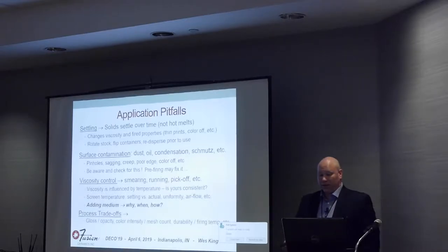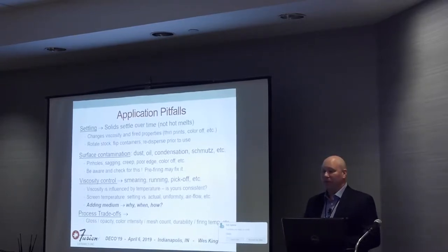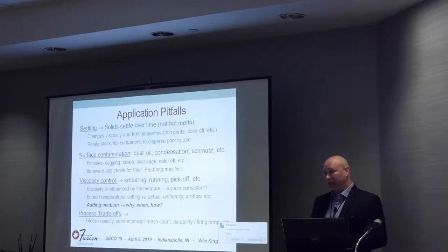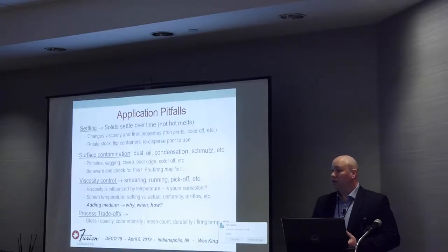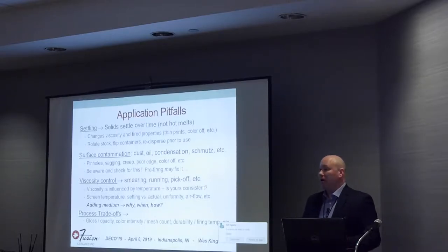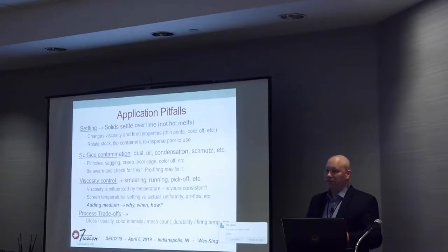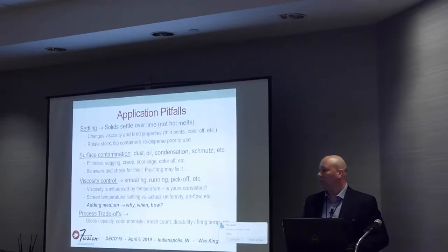It's conceptually simple but a very complicated process actually. There are dozens of trade-offs: gloss versus opacity—if I want a really dark, opaque print, I may have to increase the pigment content, which may affect gloss. Color intensity versus mesh count, durability versus firing temperature—you may have a limitation that fixes how far you can go in one direction. It's an engineering trade-off, basically.